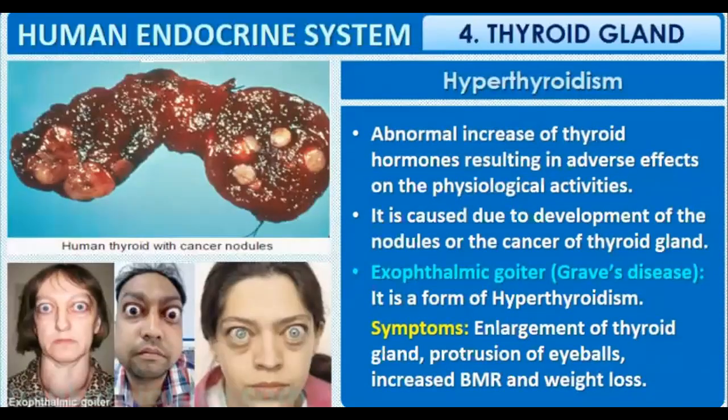The next disease is hyperthyroidism. In hyperthyroidism, the thyroid gland secretes more hormones — the T3 and T4 hormones are present in larger quantities. As a result, our metabolism is increased beyond normal levels.